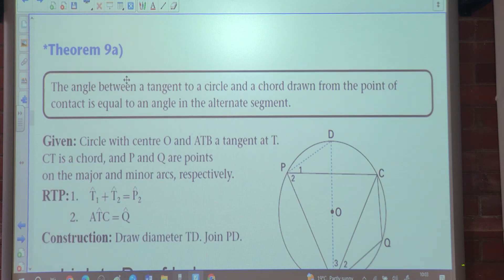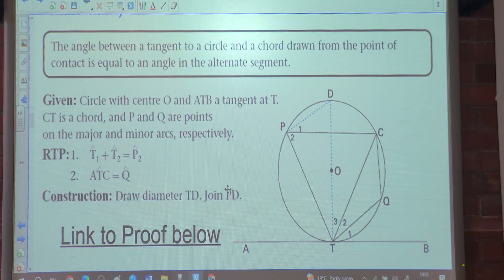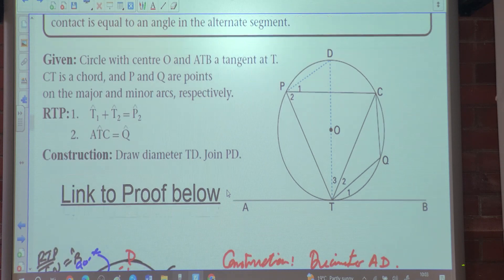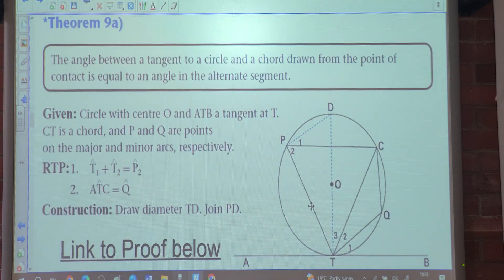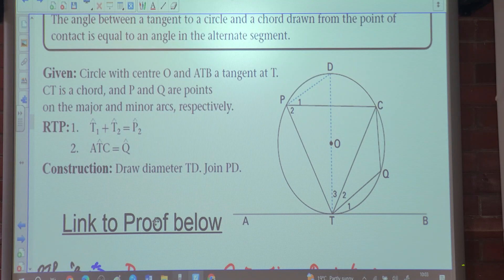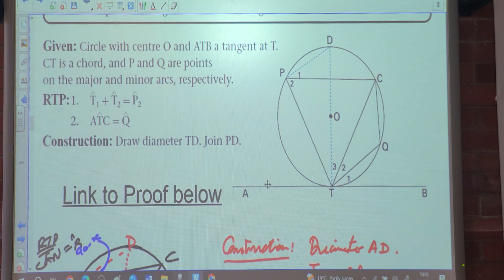Then we went on to theorem 9. The angle between a tangent to a circle and a chord drawn from the point of contact is equal to the angle in the alternate segment. This is what the tangent chord theorem. This theorem is worth six or seven marks. This is the big one. So again, we have proven this theorem. The link to this theorem will be found in the description box below.